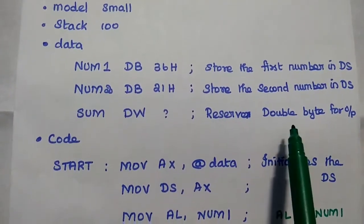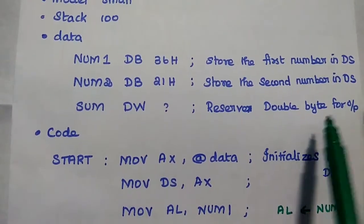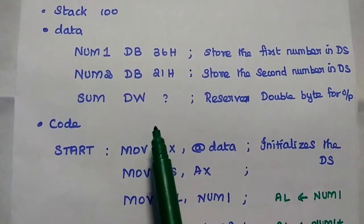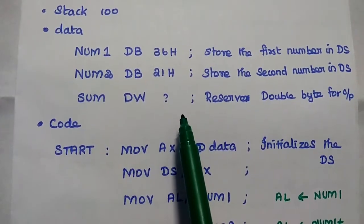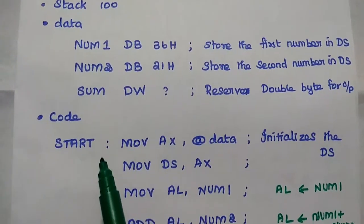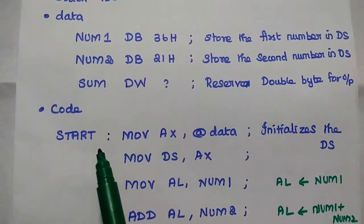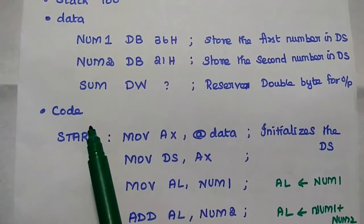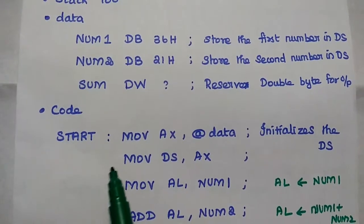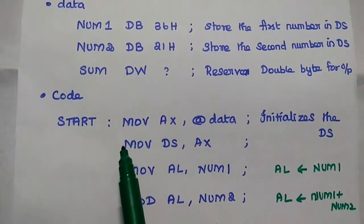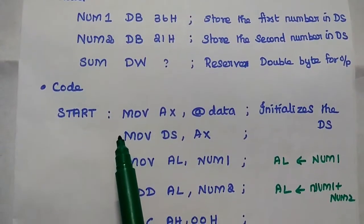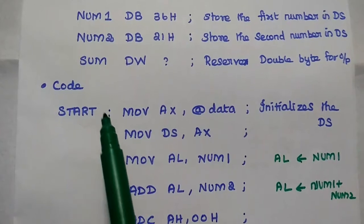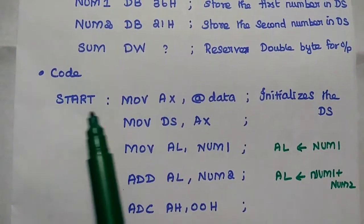Word is nothing but double byte. After allocating the data, we have to start the program. Here the code segment represents the program instructions, and it initializes the code segment.